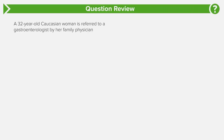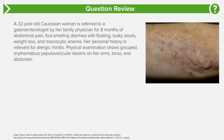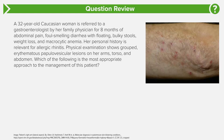Really important clinical question here. A 32-year-old Caucasian female is referred to a gastroenterologist by her family physician for eight months of abdominal pain, foul-smelling diarrhea that is floating, bulky stools, weight loss, and macrocytic anemia. Her personal history is relevant for allergic rhinitis. Physical examination shows grouped, erythematous, papulovesicular lesions on her arms, torso, and abdomen. Which of the following is the most appropriate approach to the management of this patient?